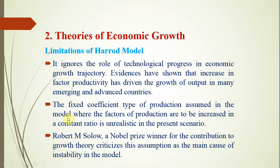The second limitation concerns the assumption of the production function. In the Harrod model, the production function is assumed to be Leontief type — that is, fixed coefficient type — which implies that factors of production are used in a fixed ratio; to increase production, all of them must be increased by the same percentage. This assumption is rather unrealistic in most cases. Robert M. Solow, a Nobel Prize winner in economics, criticizes this assumption as the main cause of instability in the model.